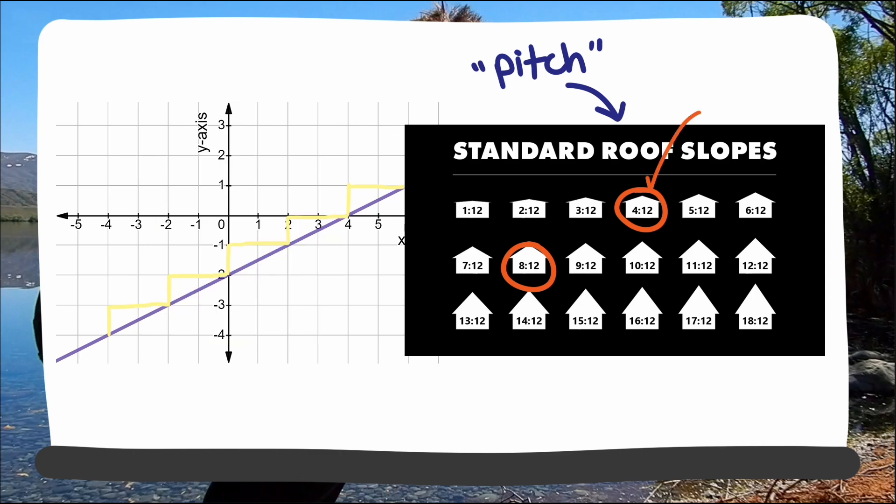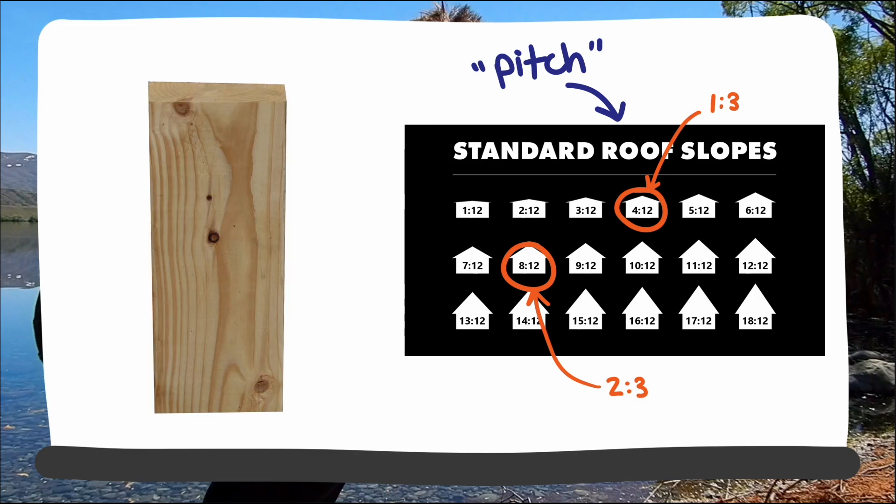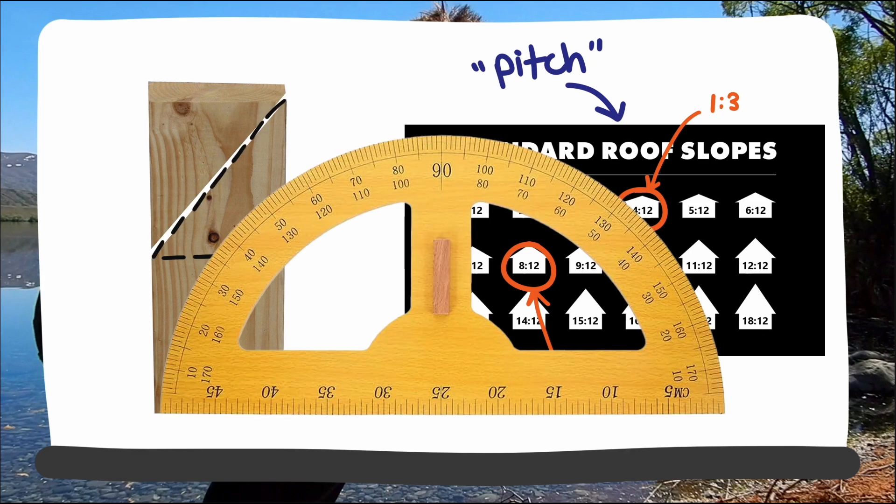These correspond to slopes of one-third or two-thirds respectively. This is very handy because if a carpenter needs to make a cut that matches the angle of the roof, then they can measure over and then up on the board to make the marks and connect them with a chalk line. Much easier and more accurate than hauling a large protractor around.